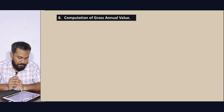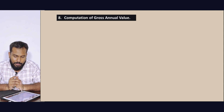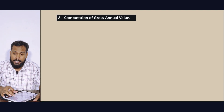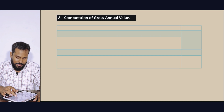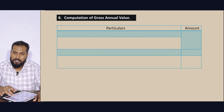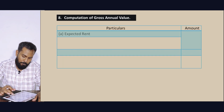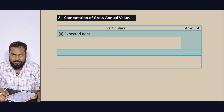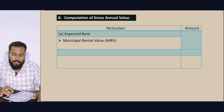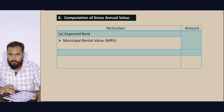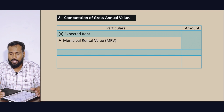Topic 8: Computation of Gross Annual Value. Where is Gross Annual Value? Simple — a particular amount. In the table: Expected Rental. What is expected? We are talking about it. Municipal Rental Value — Municipality fixed.